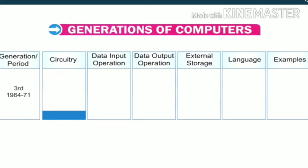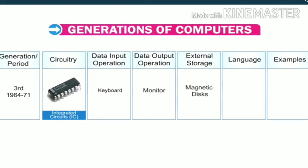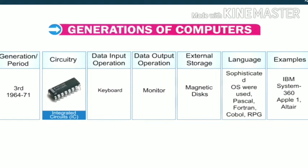Third generation computers, from 1964 to 1971, had circuitry of Integrated Circuits (IC). Data input was through keyboard and output was through monitor. External storage was on magnetic disk. Sophisticated operating systems were used along with languages such as Pascal, FORTRAN, COBOL and RPG. Examples include IBM System 360, Apple One and Altair.